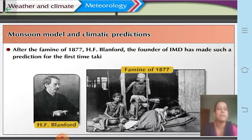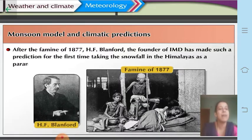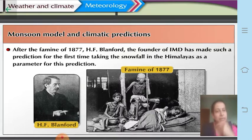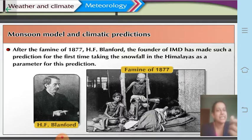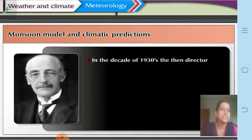After the famine of 1877, Sir H.F. Blanford — the founder of IMD — made such a prediction for the first time, taking into consideration the snowfall in the Himalayas as a parameter. For any prediction, certain parameters are needed: for example, a thermometer to measure temperature, and a rain gauge to measure rainfall. The famine of 1877 was predicted by Blanford just by looking at snowfall in the Himalayas.